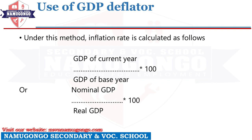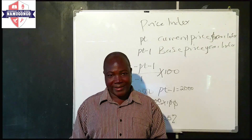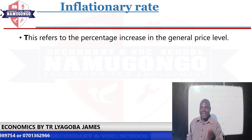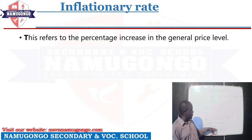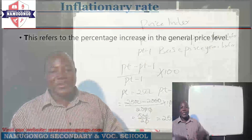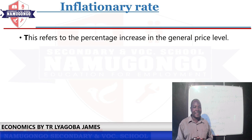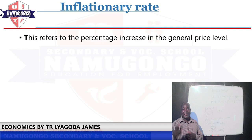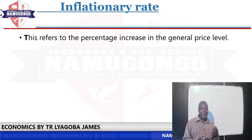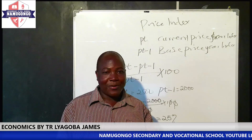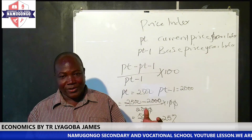We can now define the term inflationary rate. An inflationary rate is the percentage increase in the general price level. For example, according to our calculation, prices have been increasing at a rate of 25%. That rate which you have computed is what we call an inflationary rate. Note that this is not constant — prices do not keep increasing by 25% always. It varies from time to time; this year we may have 25%, another year 20%, another 10%, depending on the nature of inflation in a particular period.